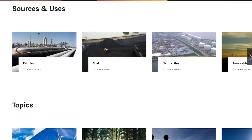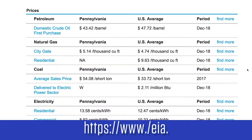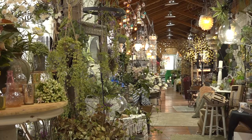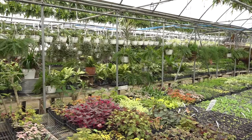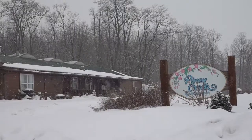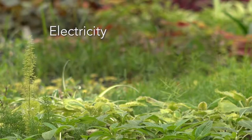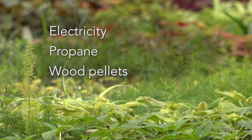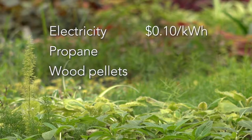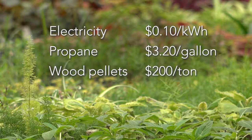First, look up the current costs of the fuels you are considering. Checking your own utility bills is probably the easiest place to find this information, but there are some good online sources of energy costs as well. For this example, let's say you are a greenhouse grower who needs to provide winter heat, and the three heating options you are considering are electricity, propane, and wood pellets. Electricity is about 10 cents a kilowatt hour, propane is $3.20 per gallon, and wood pellets cost $200 per ton.